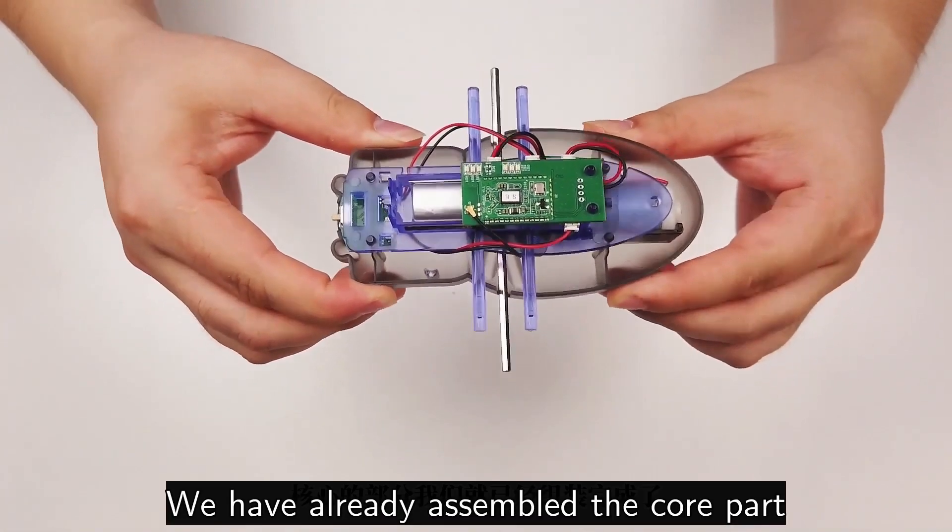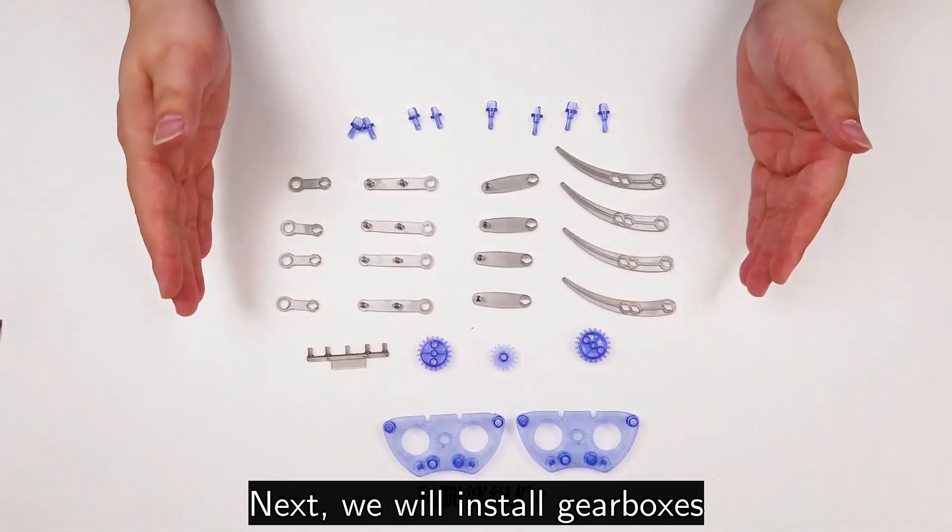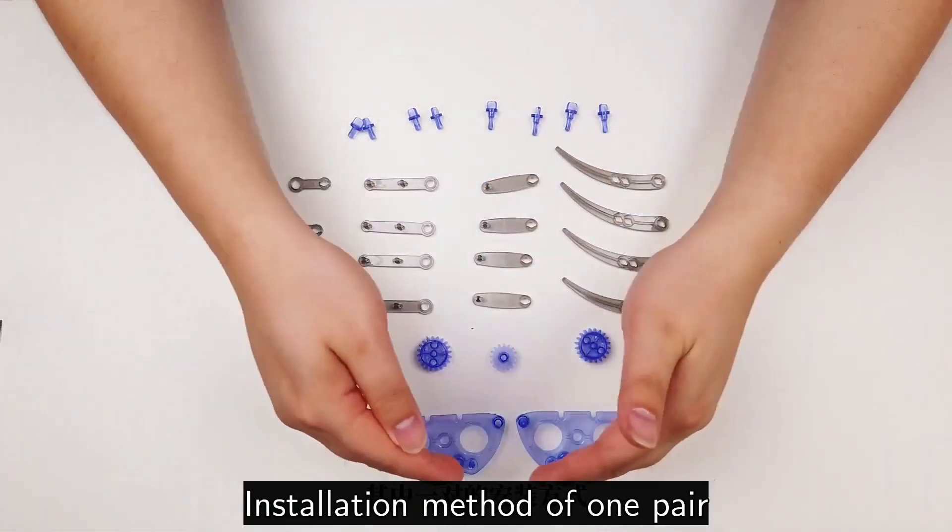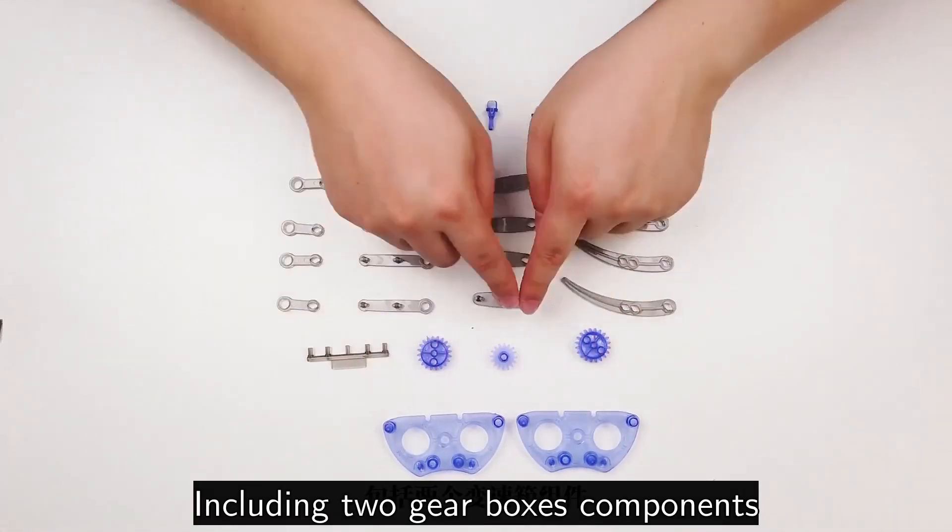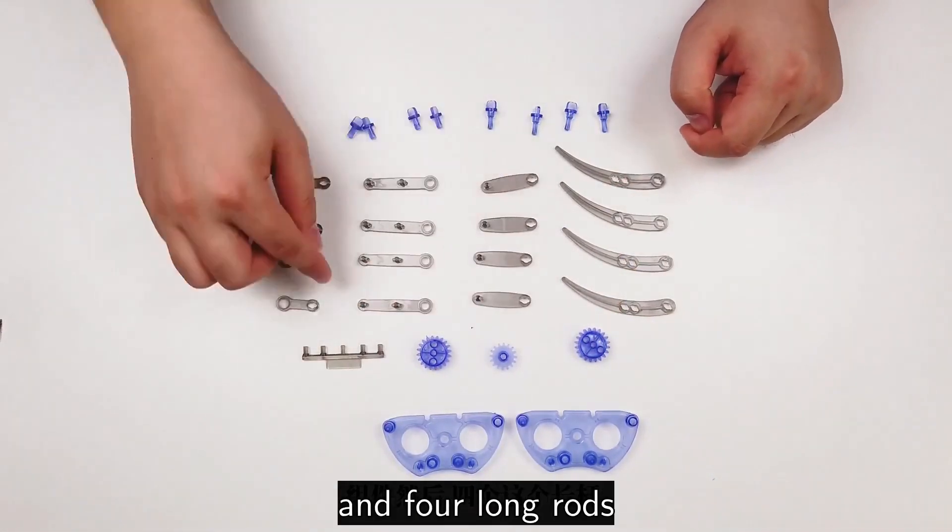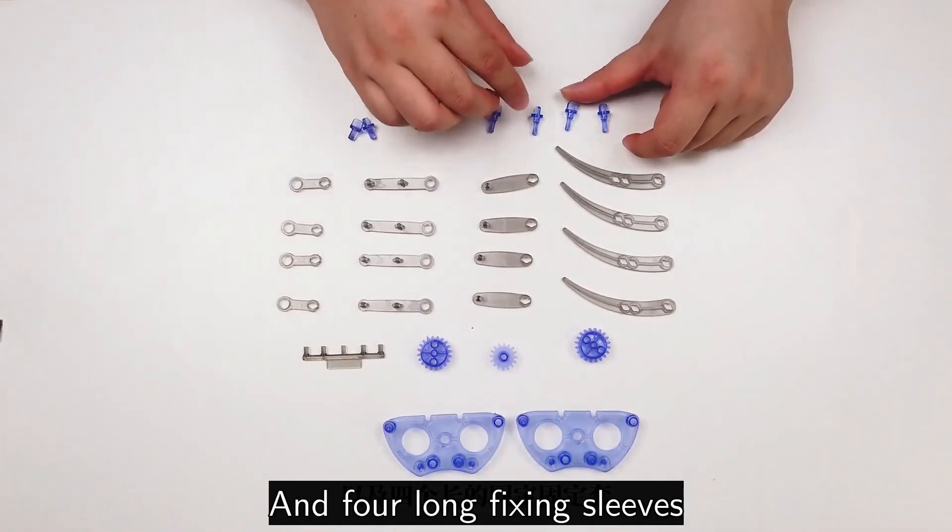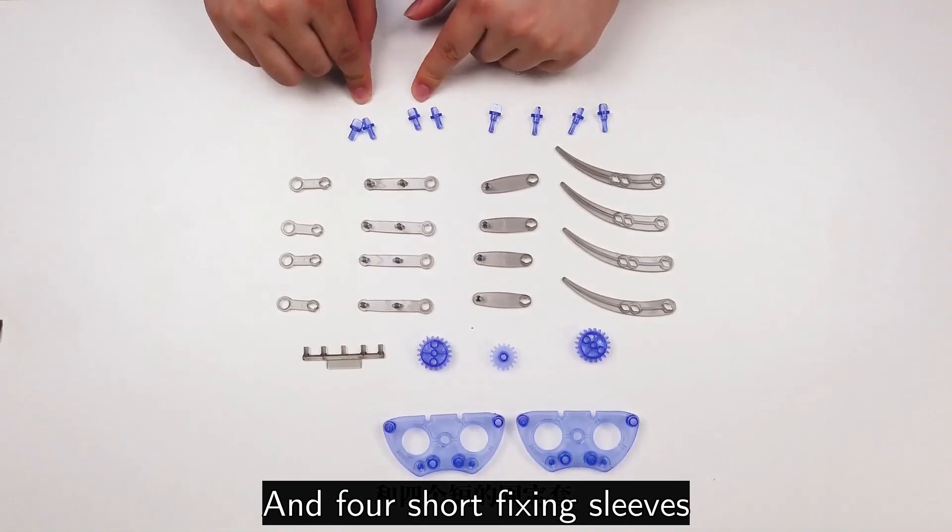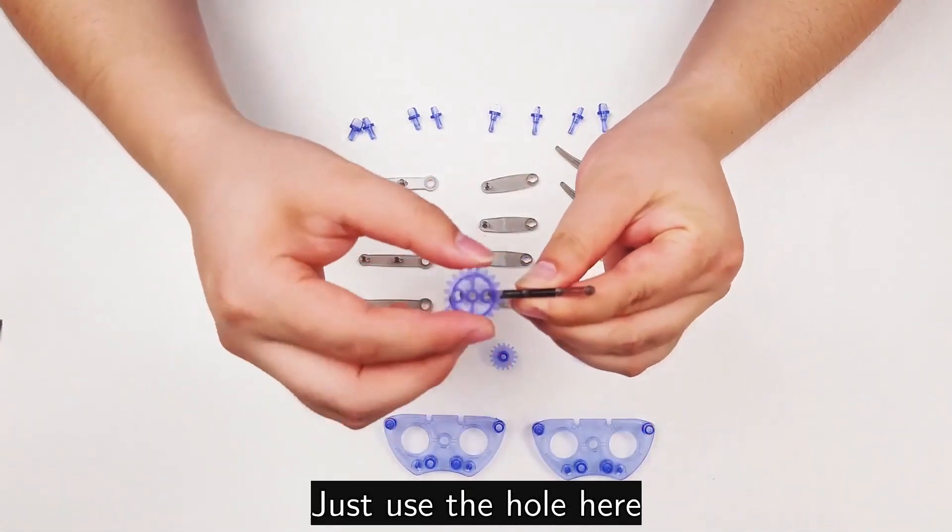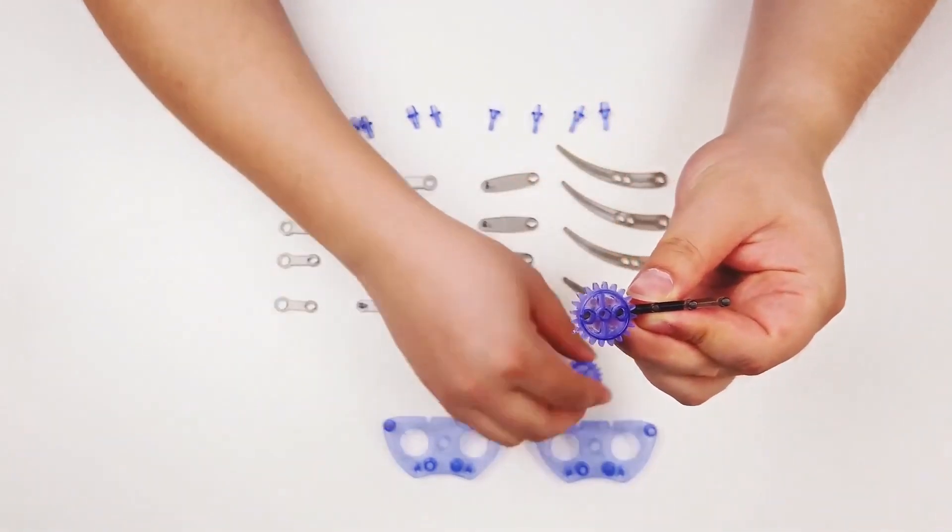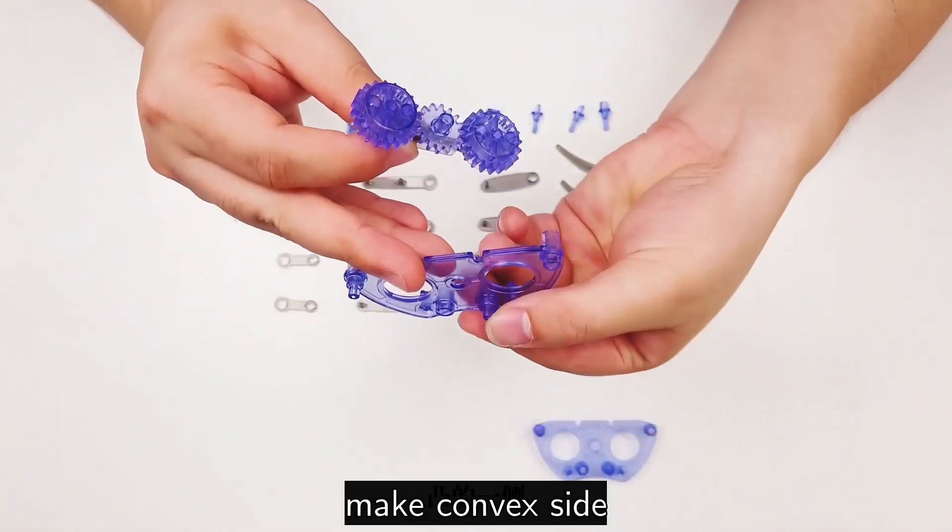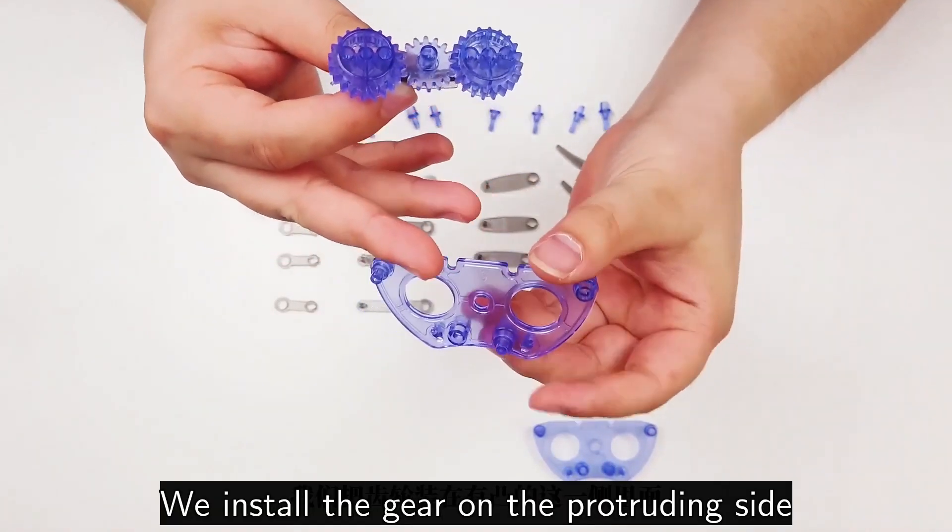We have already assembled the core part. Next we will install gearboxes and legs. The installation method for the two pairs is completely the same, so I will only show the installation method of one pair. These are all required components, including two gearboxes, two large gears and one small gear, gear holder, four legs, four of these oval shaped legs and four long rods, four adapter components, four long fixing sleeves and four short fixing sleeves. Now let's start assembling. The first thing to assemble is this gearbox. Use gear holders to hold gears, just use the hole here.